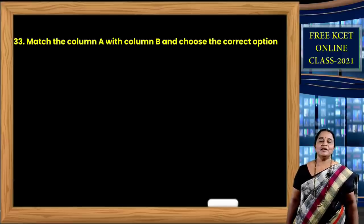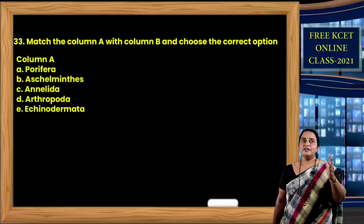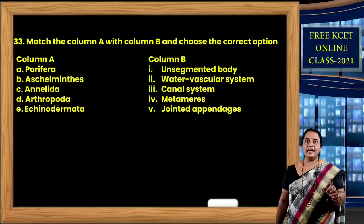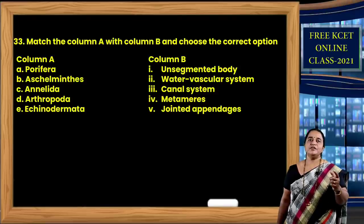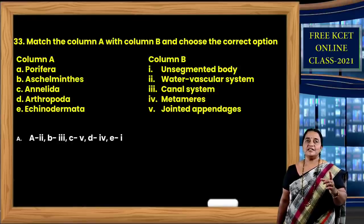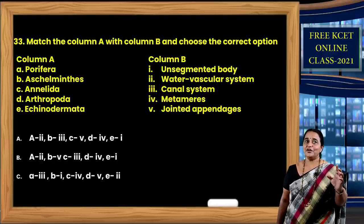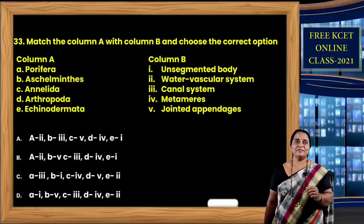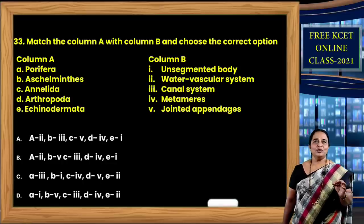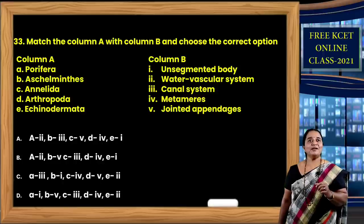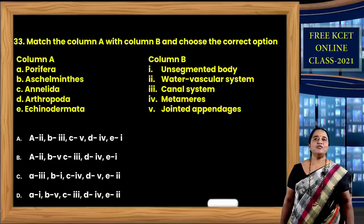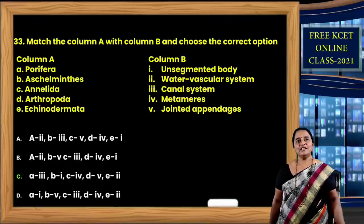Question 33: Match the following — Column A has phyla, Column B has specific features. Porifera: canal system. Aschelminthes: unsegmented body. Annelida: metamerism. Arthropoda: jointed appendages. Echinodermata: water vascular system. Matching these gives correct option C.